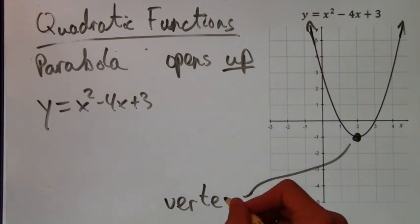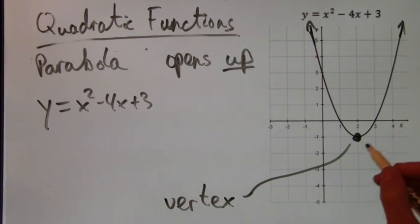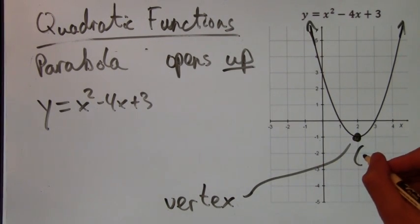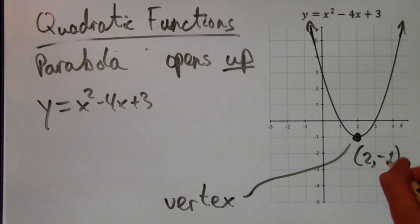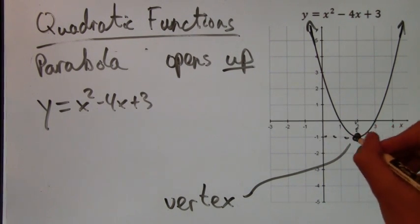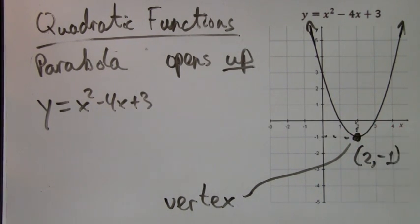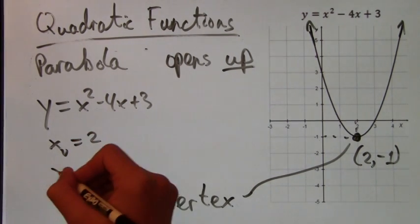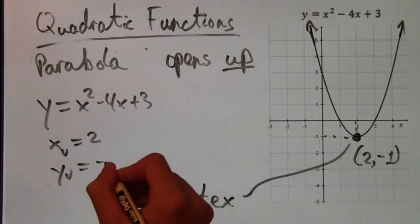Vertices, which is the plural form of vertex, are very important in parabolas. This one has the coordinates 2, negative 1. So we could write that the x-coordinate of the vertex equals 2, and the y-coordinate of the vertex equals negative 1.